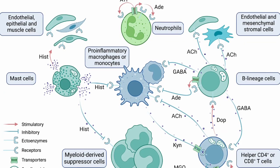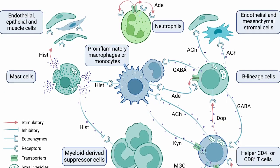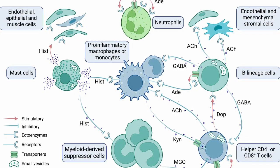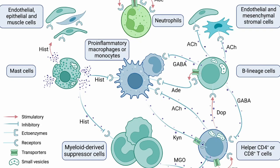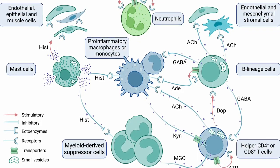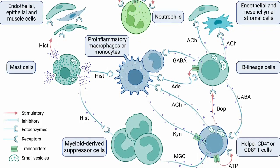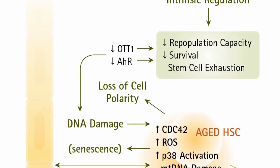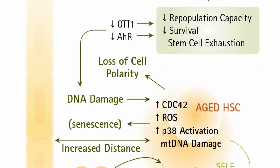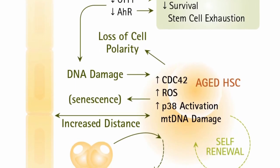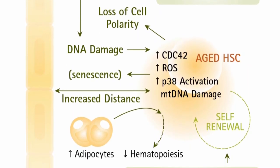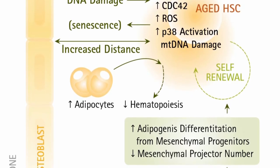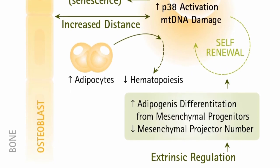The immune system relies on complex intercellular communication to identify and combat pathogens. Cells of the immune system release signaling molecules like cytokines and chemokines to coordinate immune responses. With age, alterations in signaling pathways can occur, leading to changes in the way cells respond to these signals, affecting cell function, tissue repair, and the body's overall response to external stimuli.